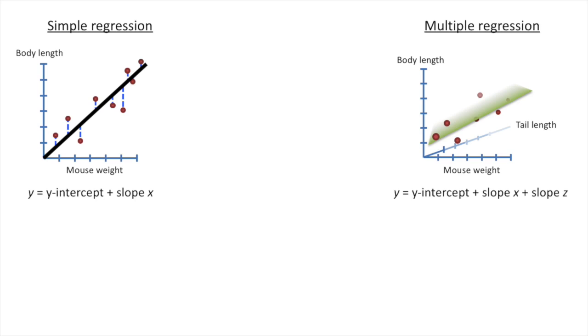In that same StatQuest, I also showed you how to fit a plane to data. Well, that's what multiple regression is. You fit a plane or some higher dimensional object to your data. A term like higher dimensional object sounds really fancy and complicated, but it's not. All it means is that we're adding additional data to the model.